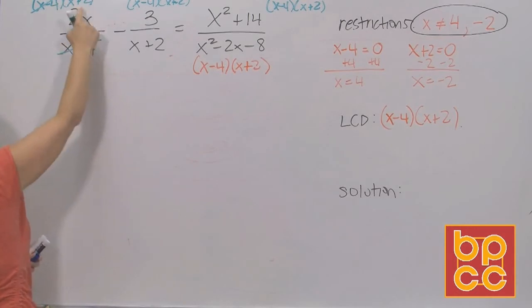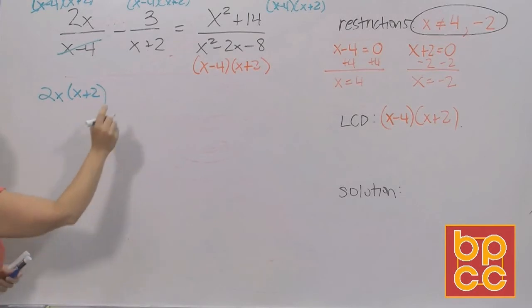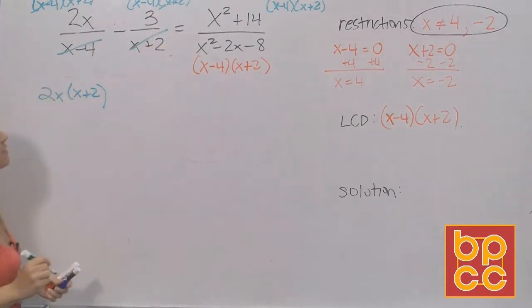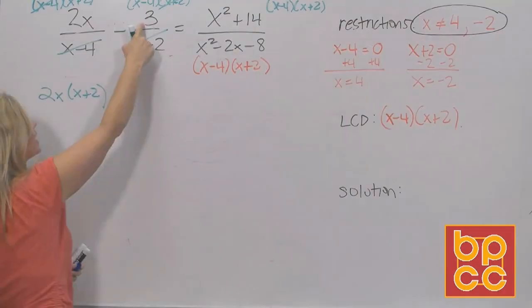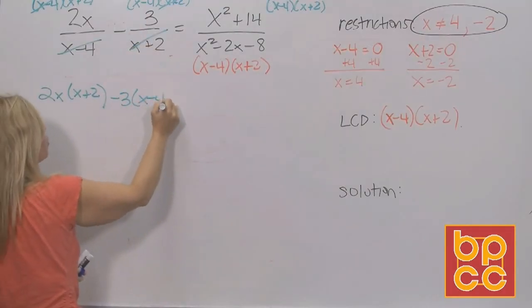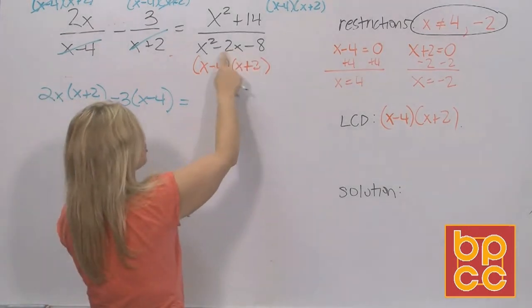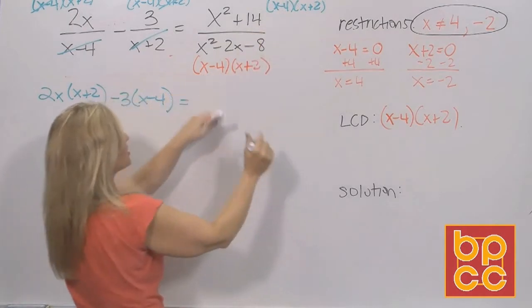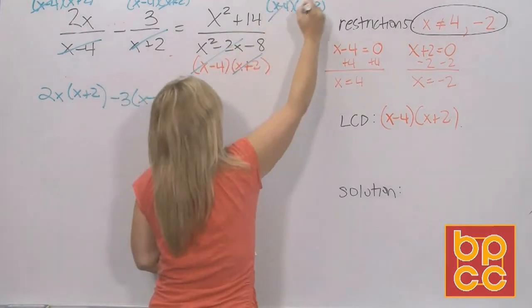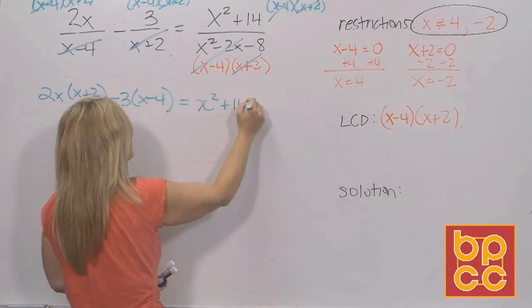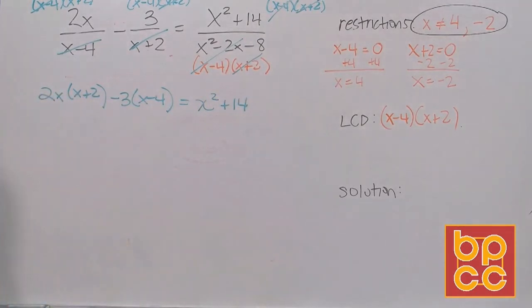The x minus 4's. So you're left with 2x times x plus 2. Second fraction, the x plus 2's are the same, so they divide out. So you're left with negative 3, x minus 4. Bring down your equals. In the third fraction, this trinomial factors to be exactly what the LCD is, so it all cancels out. And you're left with x squared plus 14. So that's what we've already learned in module 1. We're using those skills again. To solve a rational equation, you have to get rid of the fractions by using the LCD.